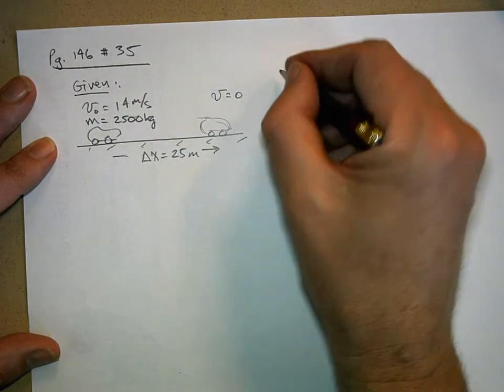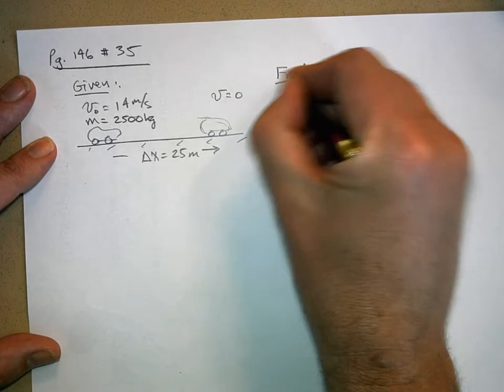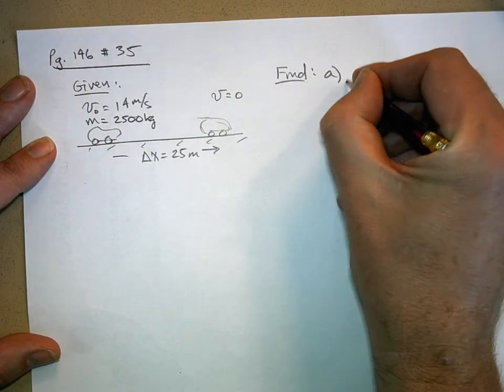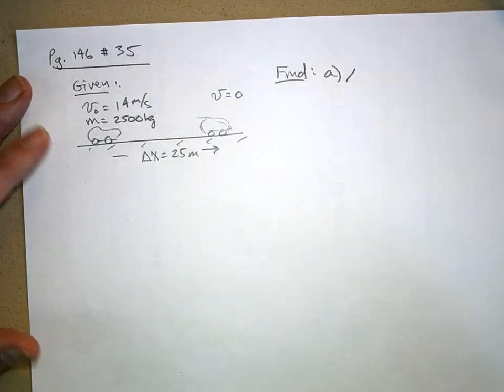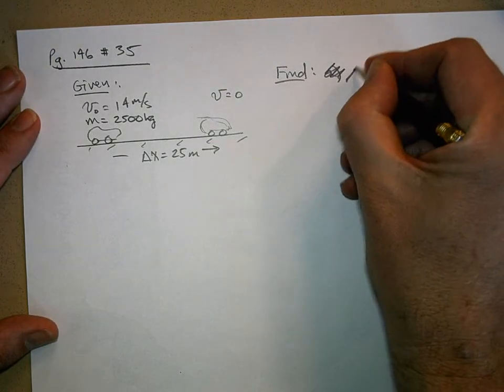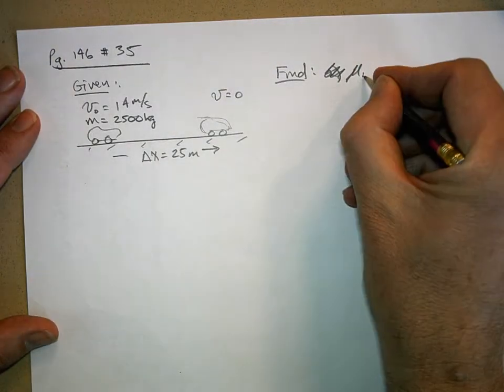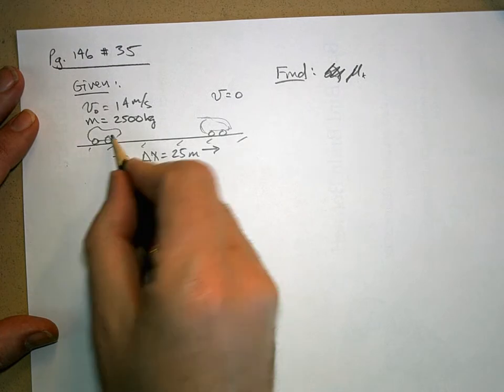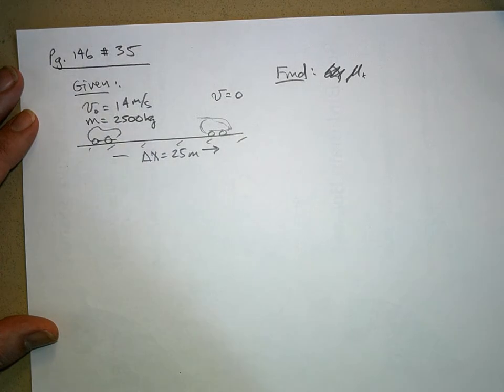And what are we trying to find? We want to find the coefficient of kinetic friction, mu sub k, because it's sliding. You've locked your wheels up. It's sliding friction.